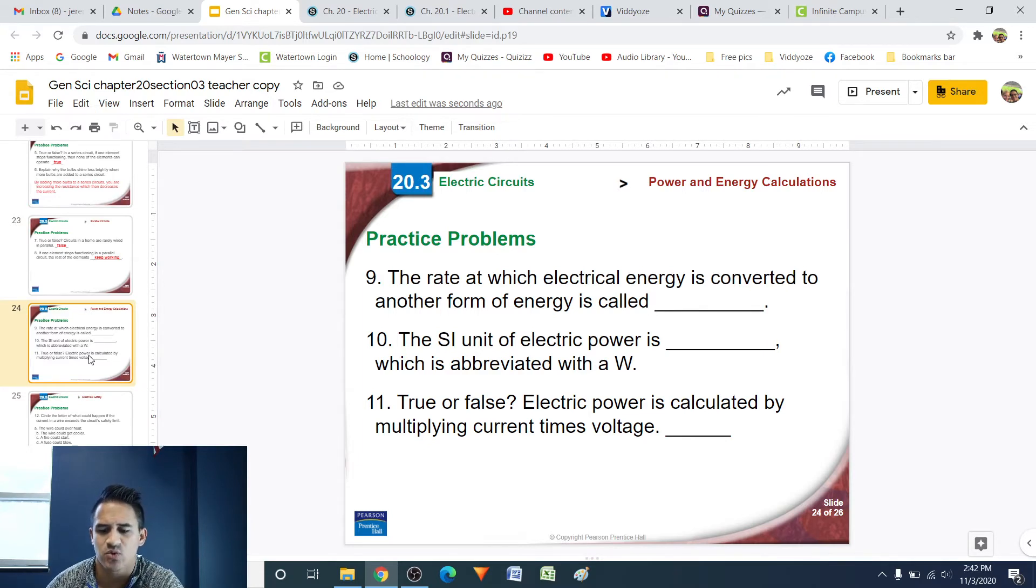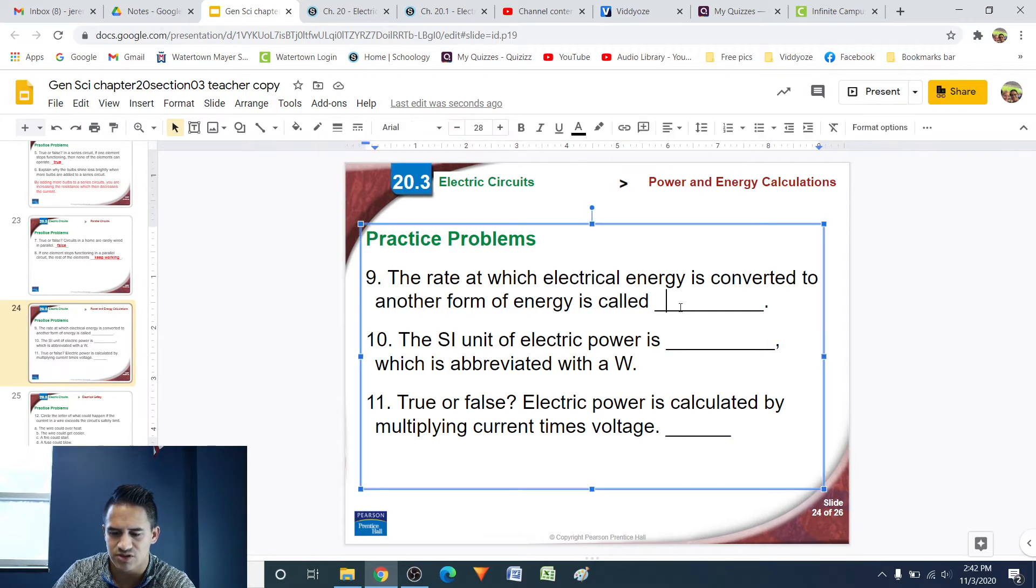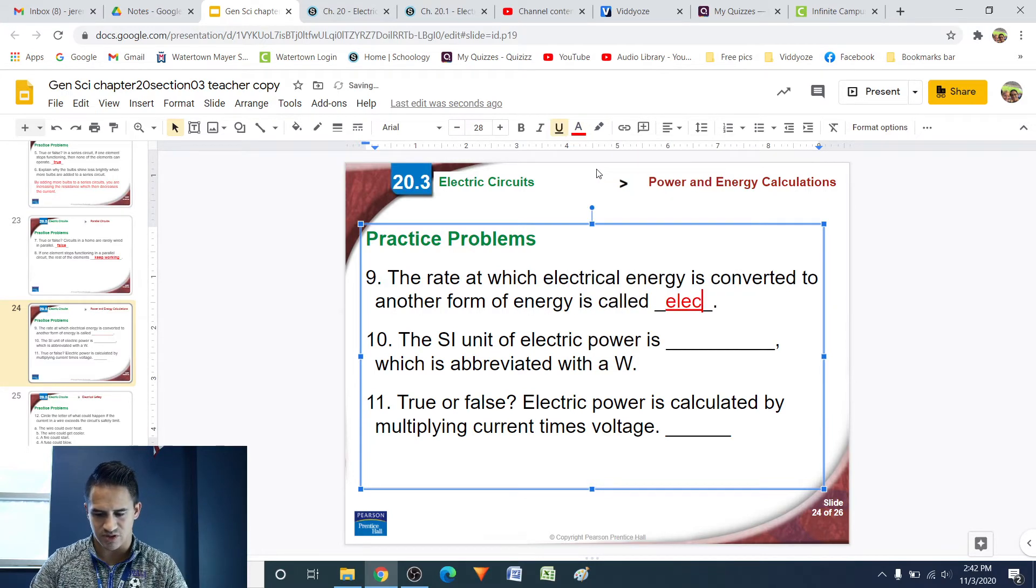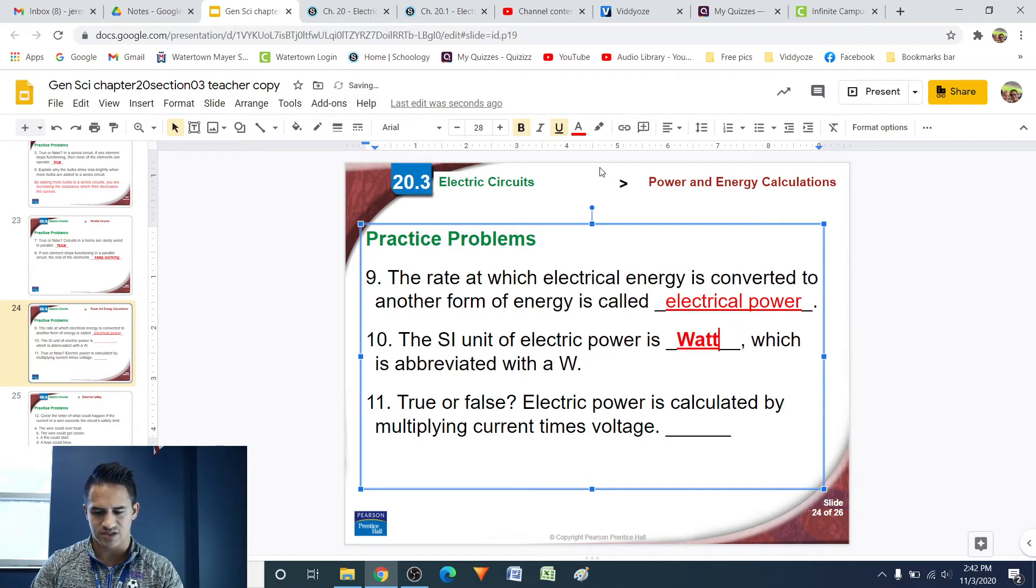Number 9, the rate at which electrical energy is converted to another form of energy is called, so this is electrical power. The rate at which work or energy is transferred, so we will call this electrical power. Number 10, the SI unit of electric power is blank, which is abbreviated with a W. This is the same unit of power that we dealt with in the previous quarter of general science, and that is the watt. The SI unit of electric power is the watt, which is abbreviated with a capital W.